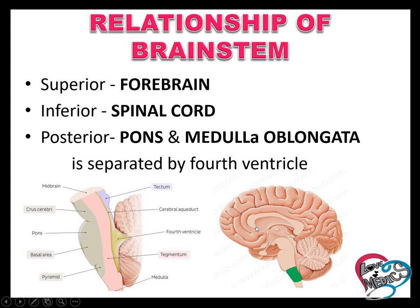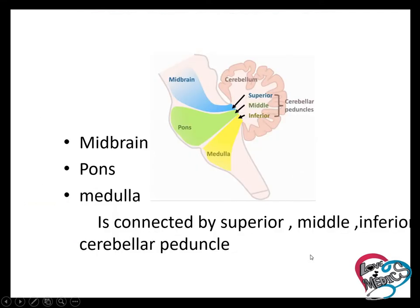Relationship of brainstem. This one is the brainstem. Superiorly, the cerebrum is present — that is the forebrain. Inferiorly, the spinal cord is present. And posteriorly, pons and medulla oblongata are separated by the fourth ventricle, and the cerebellum is also present. The midbrain, pons and medulla oblongata are connected by the superior, middle and inferior cerebellar peduncles.